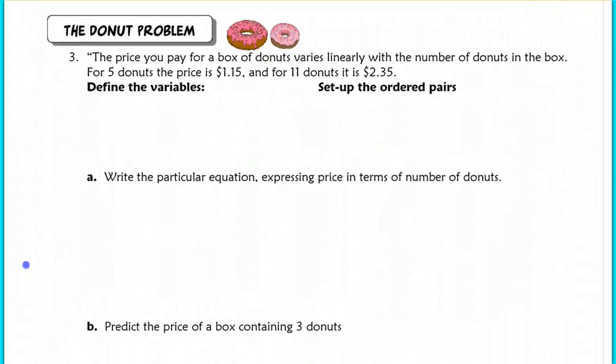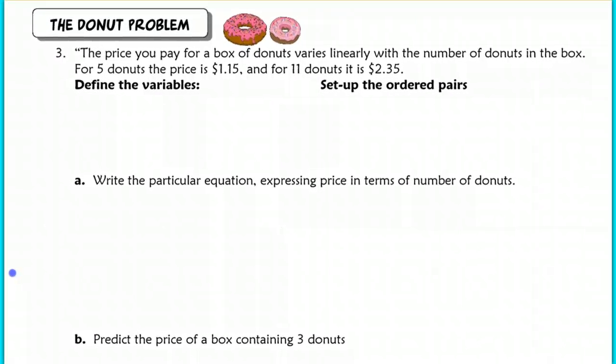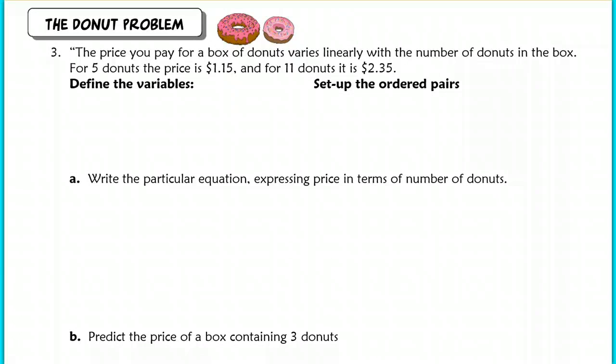All right. So, let's get into our first problem. This is our first model problem. So, it says, this is our donut problem. The price you pay for a box of donuts varies linearly with the number of donuts in the box. So, in other words, the more donuts you buy, the more money you pay. And, the fact that it says varies linearly, this is why this is kind of an easier problem because we're being very straightforward about it. The price is your dependent variable and the number of donuts is going to be your independent variable. How many donuts you get determines what the price that you pay is. So, price depends on donuts. So, let's do D for donuts, number of donuts. And, let's use P for price.